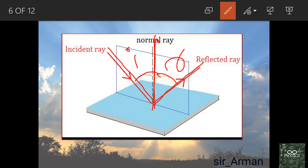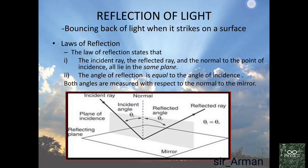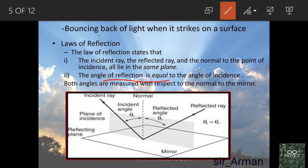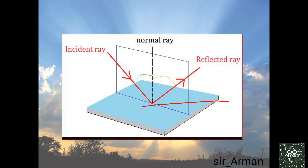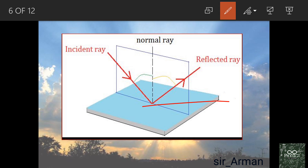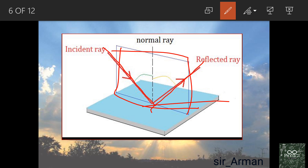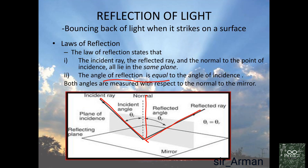These angles are always equal, whatever the kind of surface — whether polished or rough — the laws of reflection are always followed. The second property is that the incident ray, the reflected ray, and the normal all lie in the same plane. The angles must always be measured with respect to the normal.